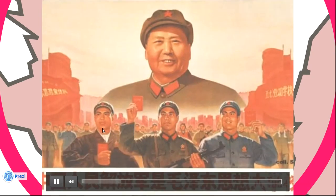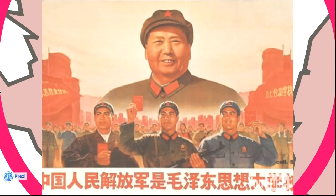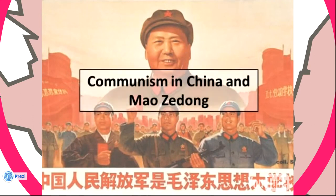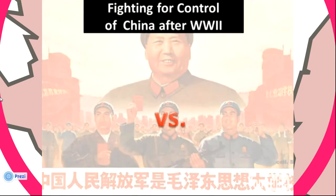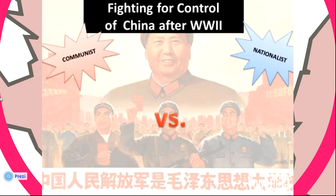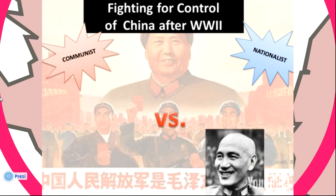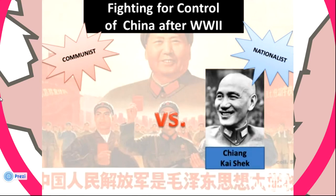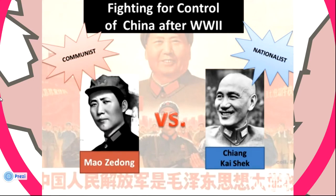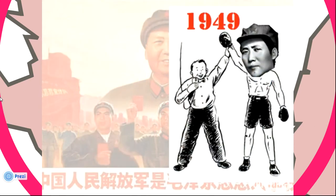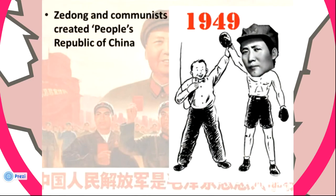Tonight's video is all about how China came to be a Communist country, led by Mao Zedong. After World War II, China fought a civil war. The two sides were the Nationalists, led by Chiang Kai-shek, and the Communists, led by Mao Zedong. Communist forces won the war by 1949 and created the People's Republic of China.